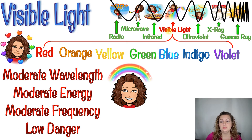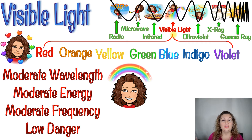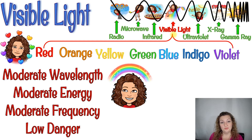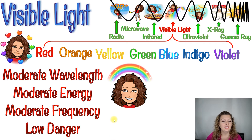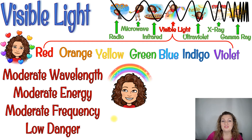Next up is visible light, and visible light is smack in the middle of the electromagnetic spectrum — we've finally made it halfway across. This is our rainbow; this is all that humans can see. If you look around and you can see it, that's visible light — literally, it's colors. The colors are in order of the rainbow: red, orange, yellow, green, blue, indigo, and violet — otherwise known as ROY G. BIV, if that helps you remember it. These are all going to be pretty moderate since we're in the middle: moderate wavelength, moderate energy, moderate frequency, and low danger. Our colors don't hurt us at all.